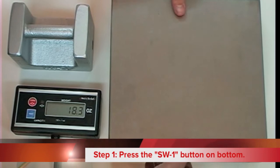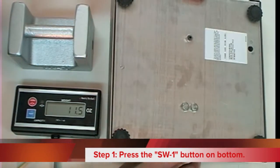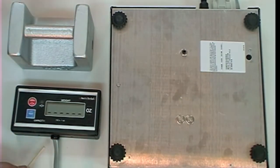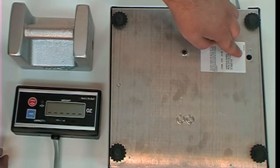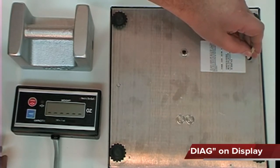To start, using a pen or small screwdriver, press the SW1 button located on the bottom of the scale. The display should read DIAG for Diagnose.